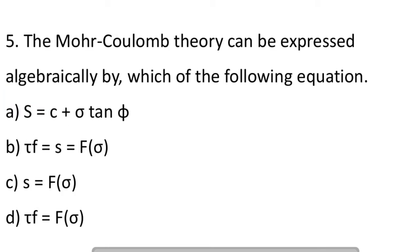Next question: the Moore-Coulomb theory can be expressed algebraically by which of the following equation? Option A: S equal to C plus sigma tan phi. Option B: tau F equal to S equal to F of sigma. So the answer is B, tau F equal to F of sigma.